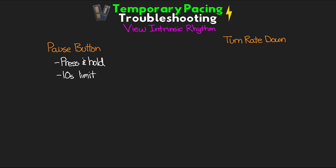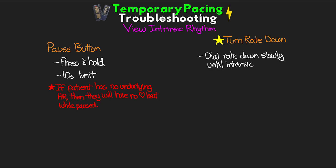If you hold the pause button for 15 seconds, after 10 seconds it reverts back automatically. The important thing with the pause button is that if the patient has no underlying rhythm, they'll have no heartbeat while the pacemaker is paused. The preferred method is turning the rate down — simply dial the rate down slowly until the patient's intrinsic rhythm is observed. You don't have to go all the way to zero; if no rate is seen in the 30s and 40s, you can reasonably assume they have no intrinsic rate or are pacer-dependent.